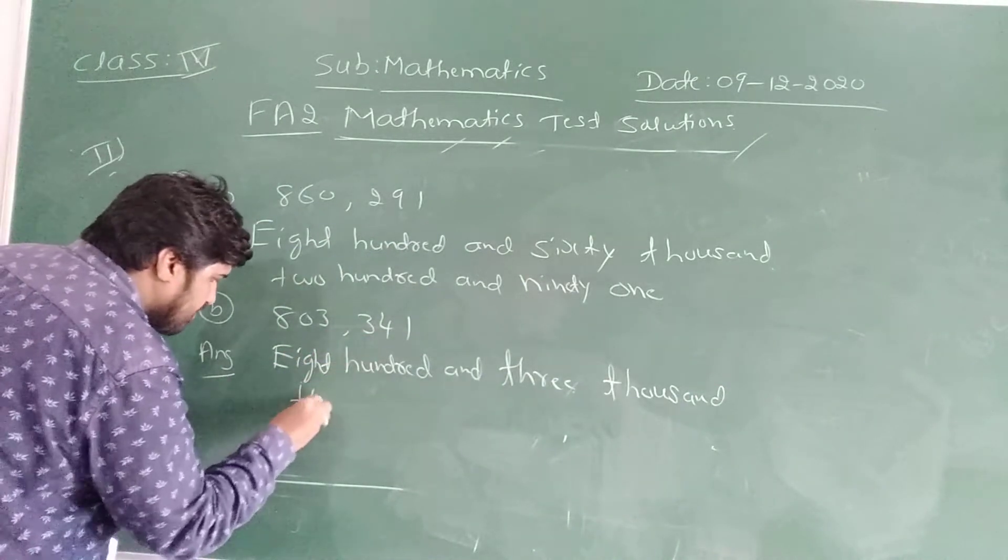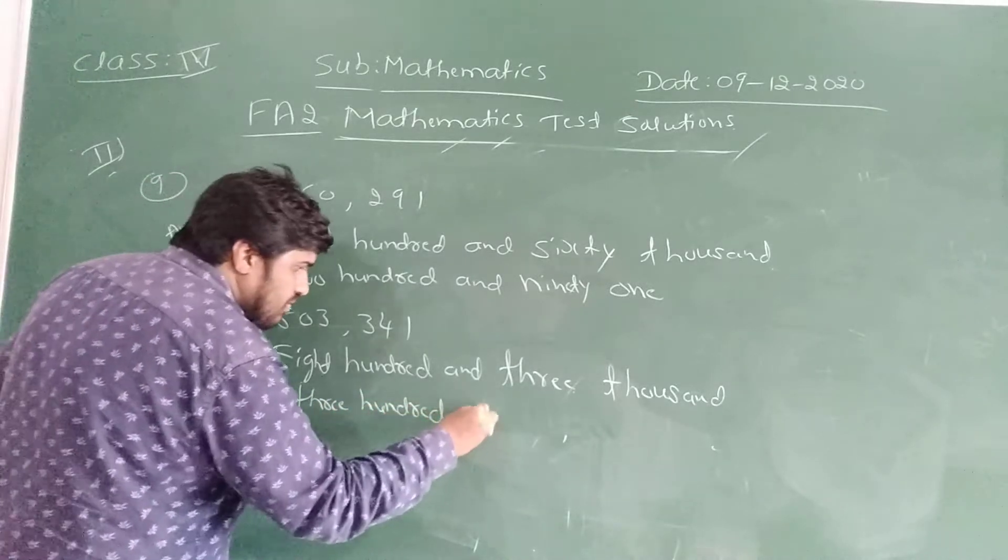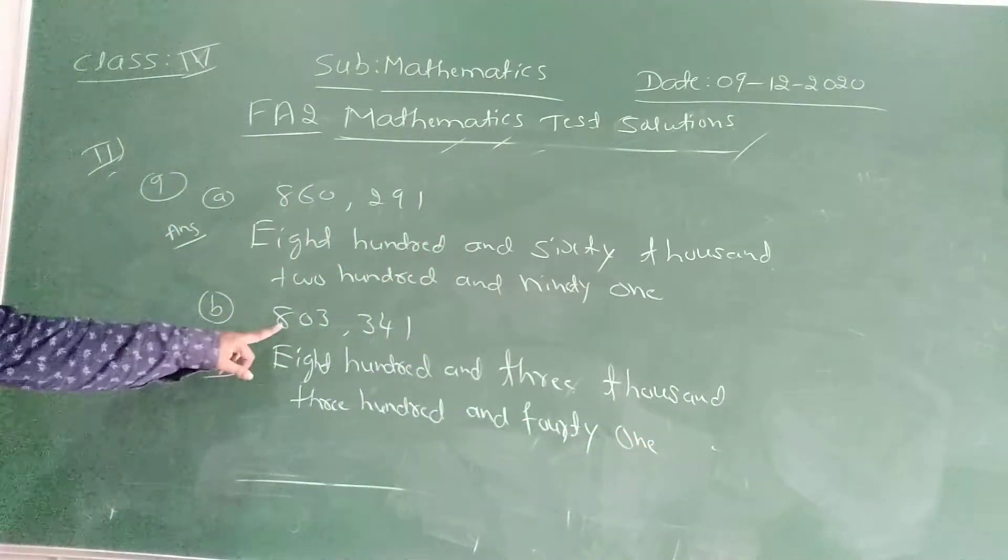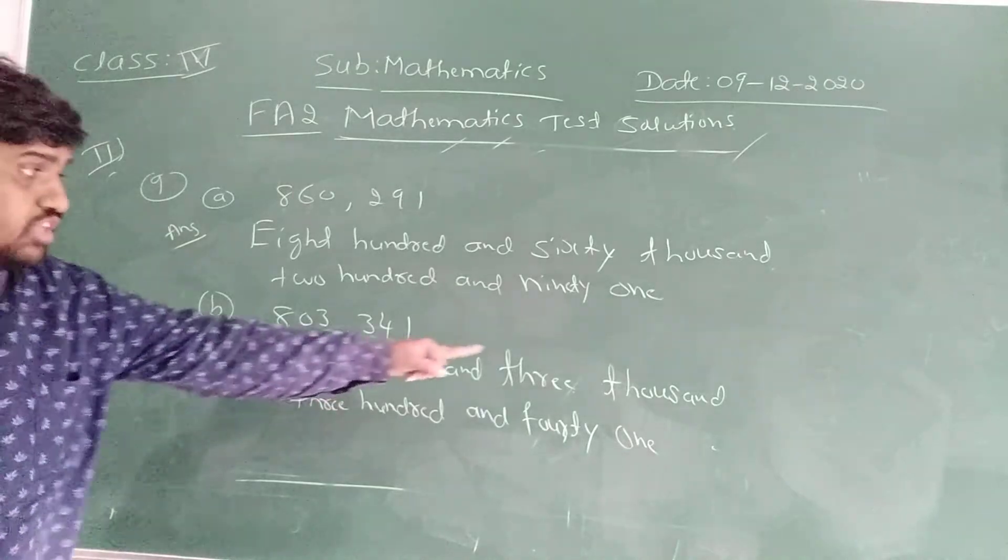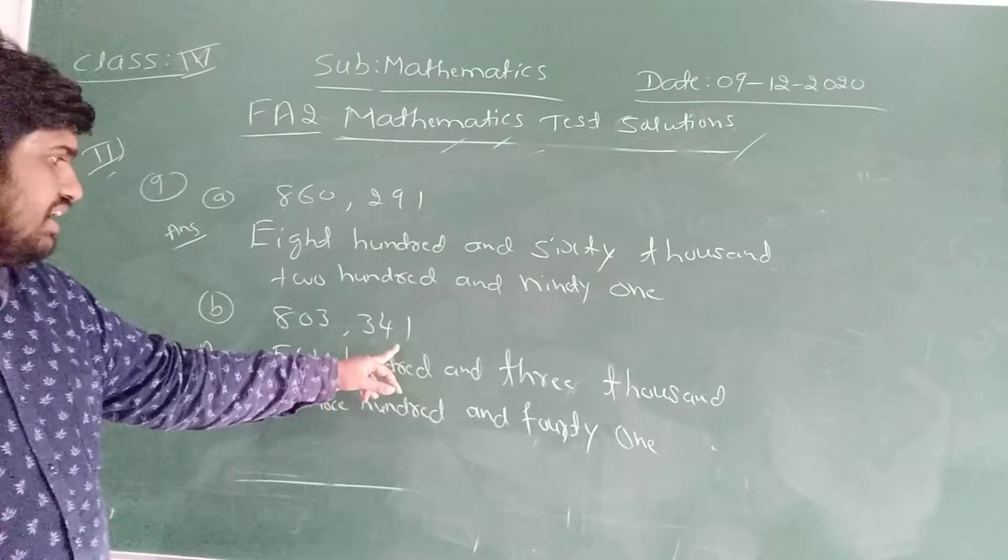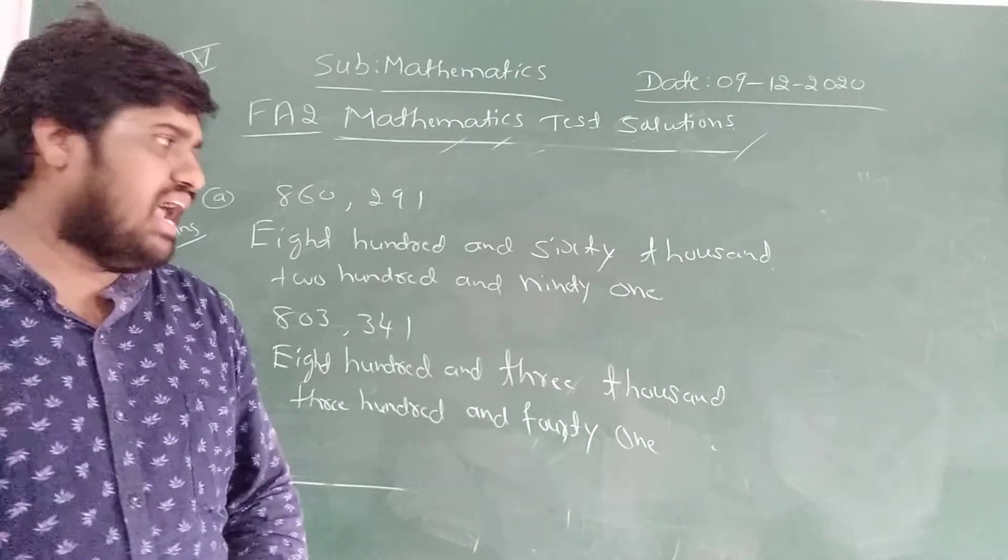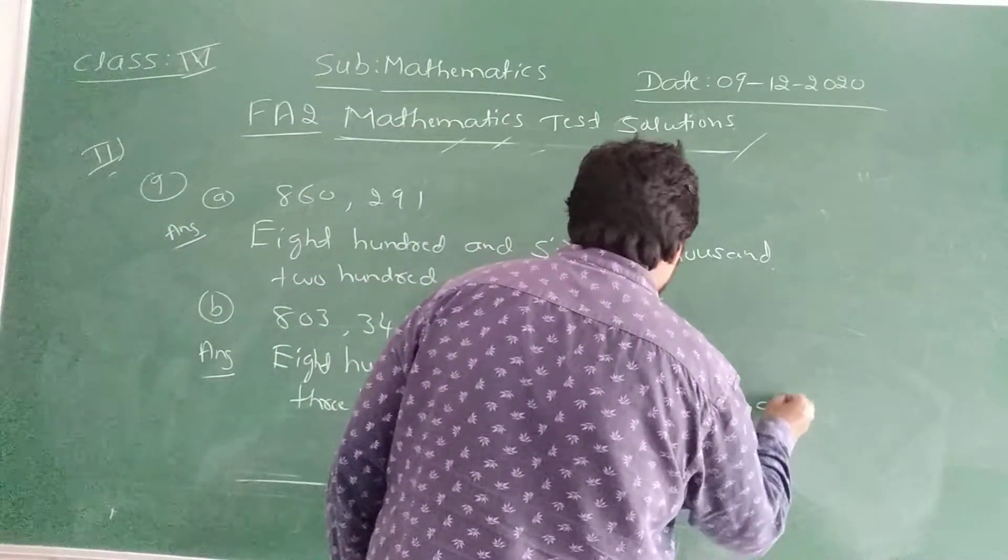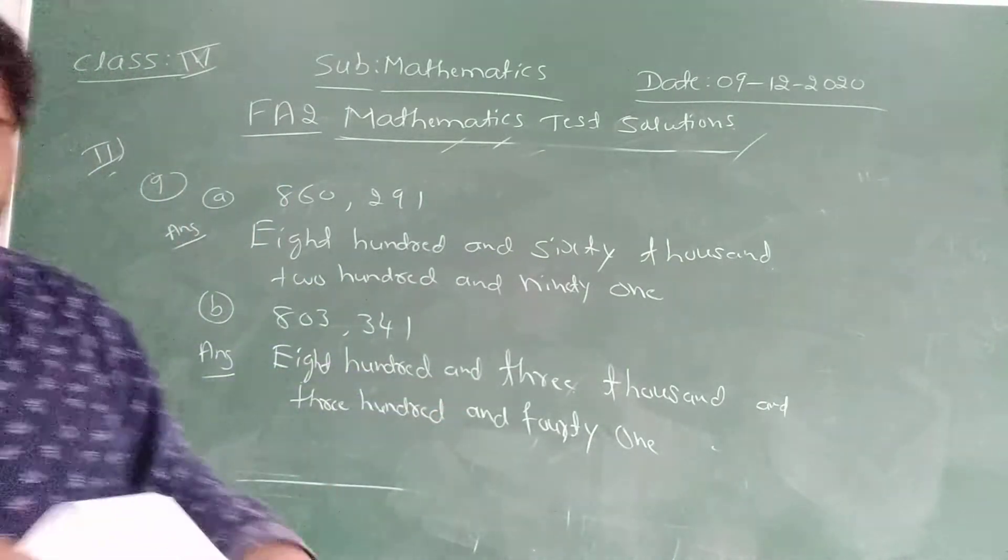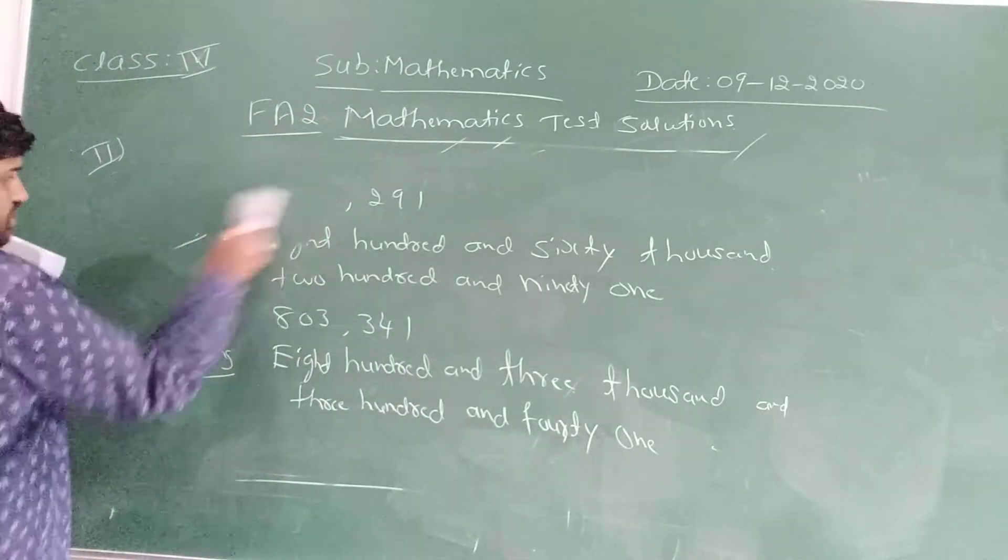300, 341. Are you understanding here? 803 thousand, 341. 803 thousand, 341. Okay.